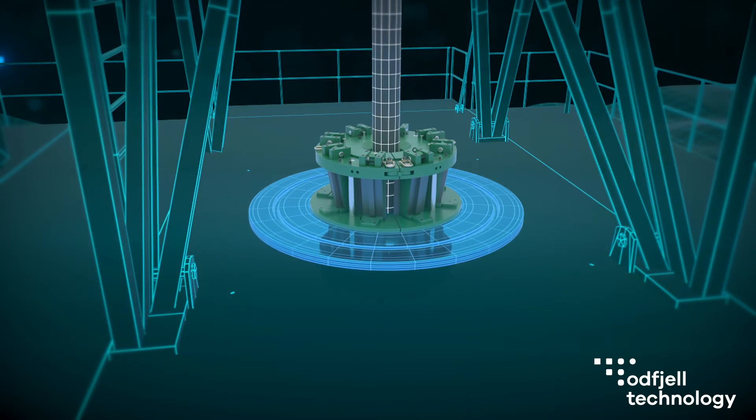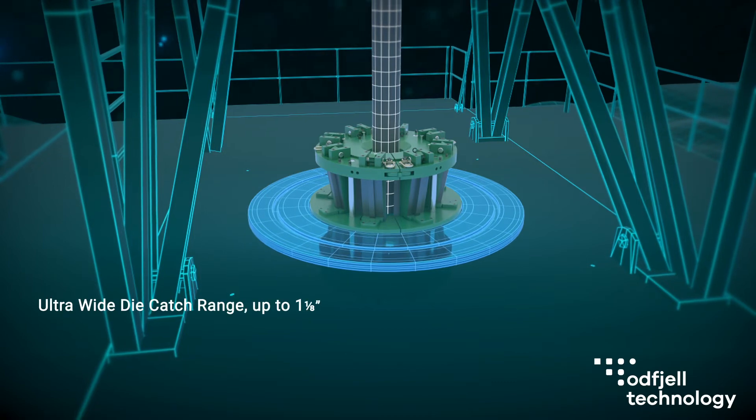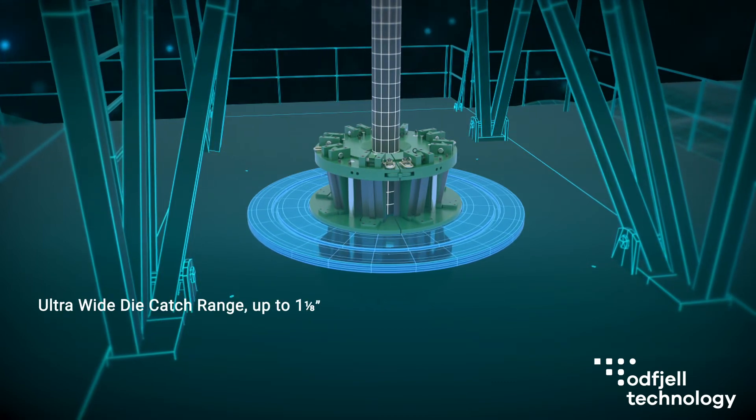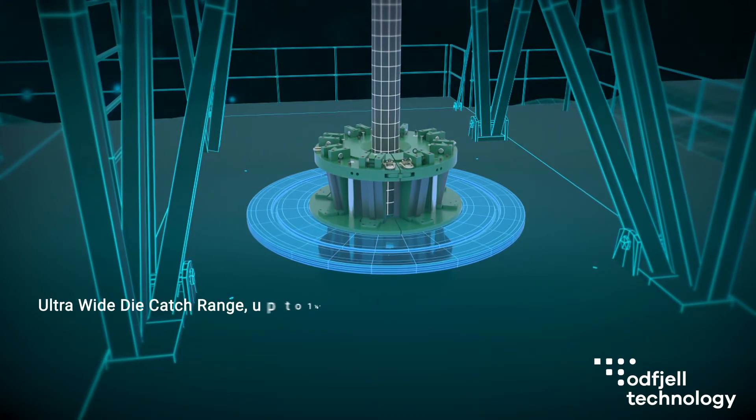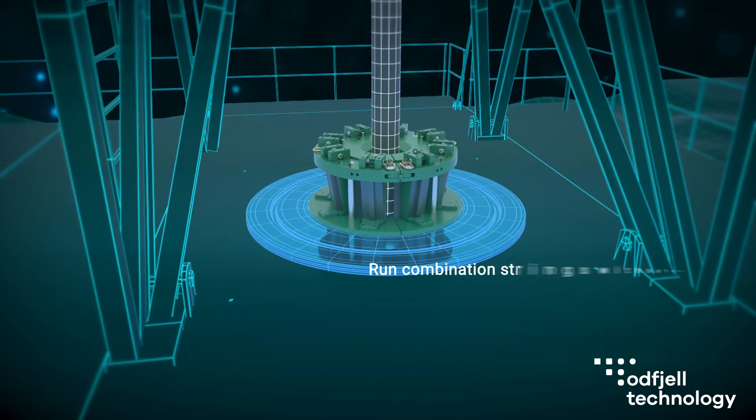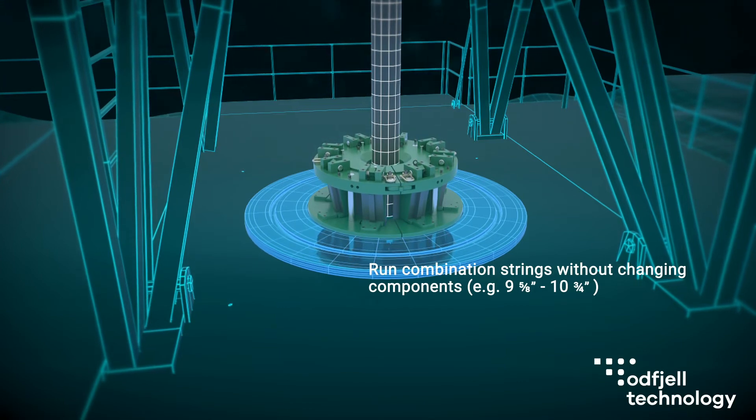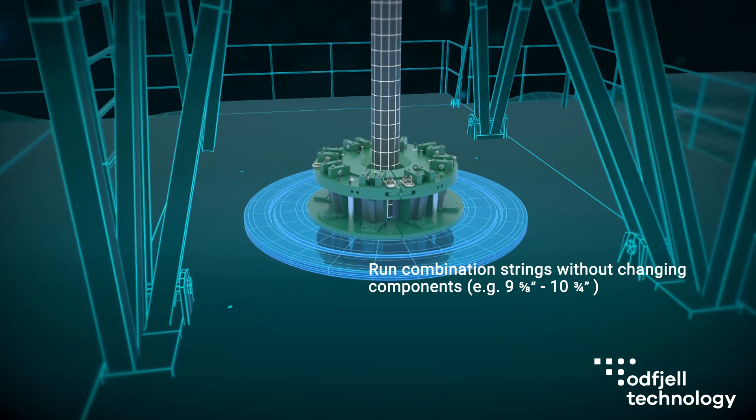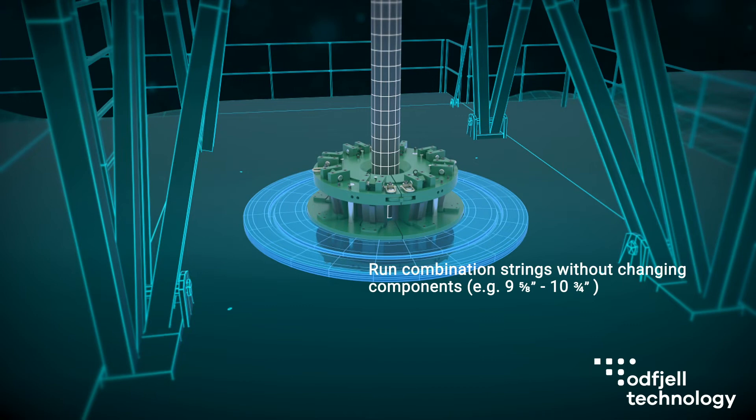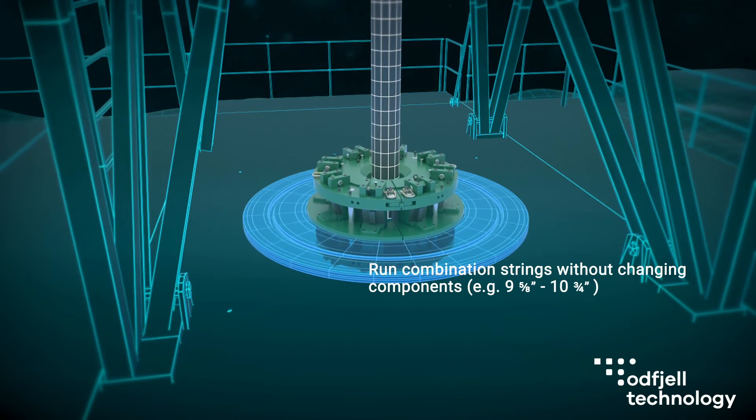With up to 1⅛-inch die-catch range, the game-changing feature of the UltraFMS is its ability to handle combination strings without changing any components. For example, 9⅝-inch and 10¾-inch casing can be run seamlessly without stopping.